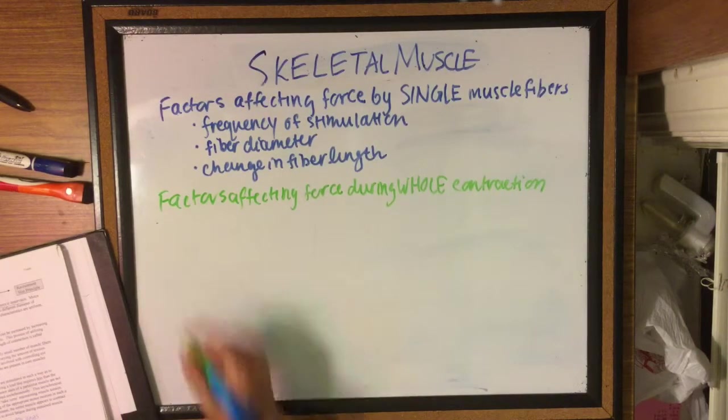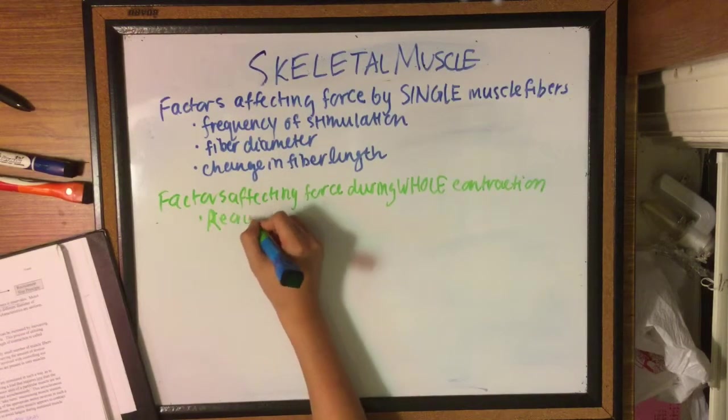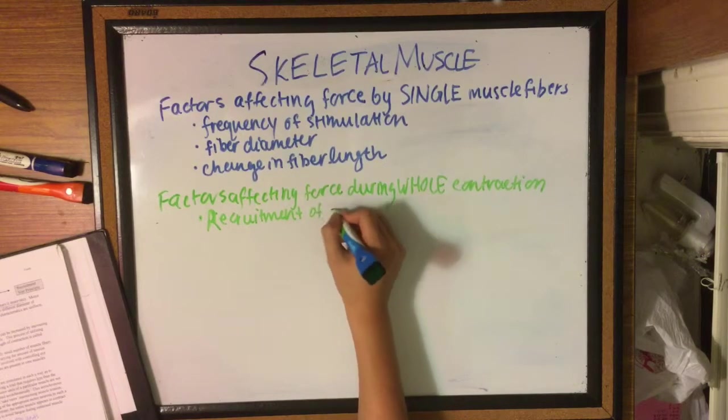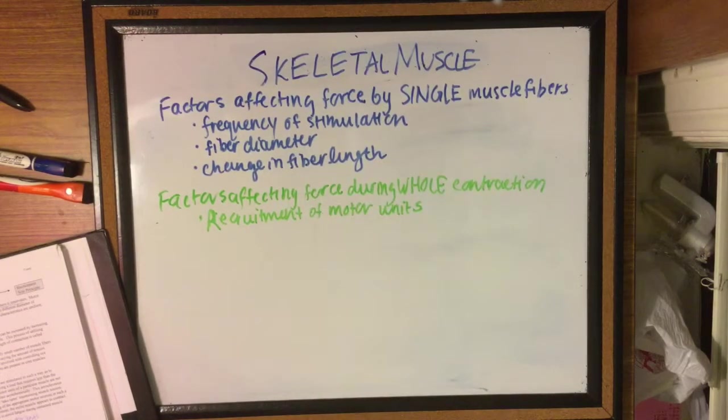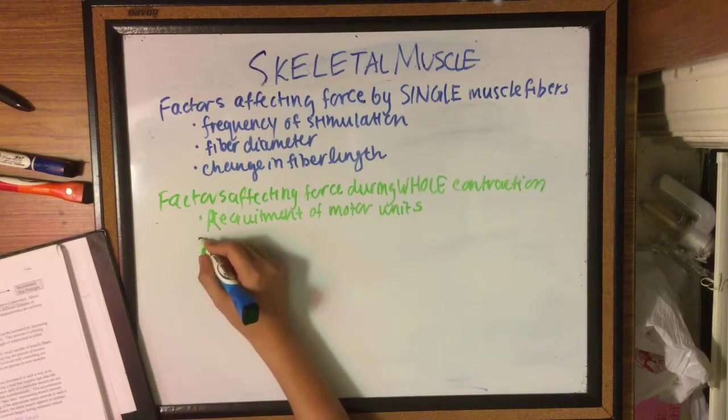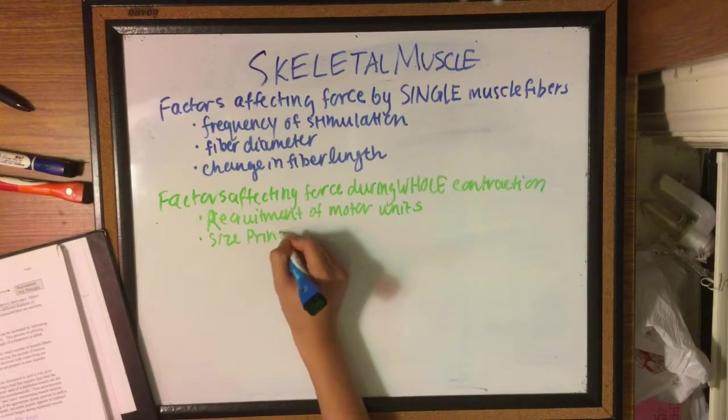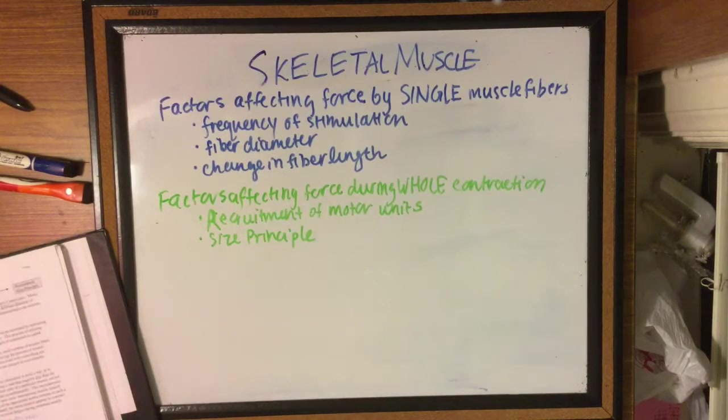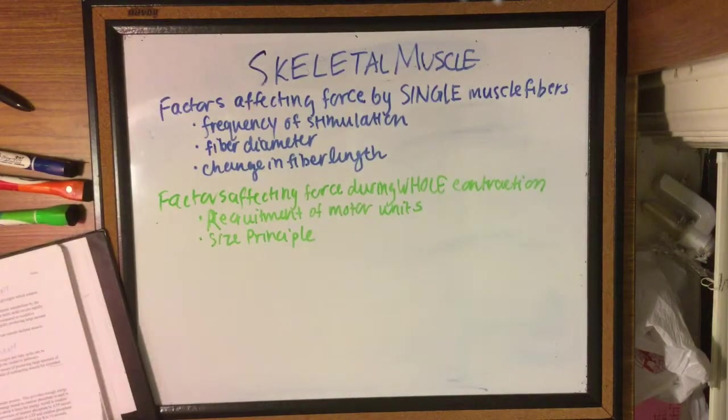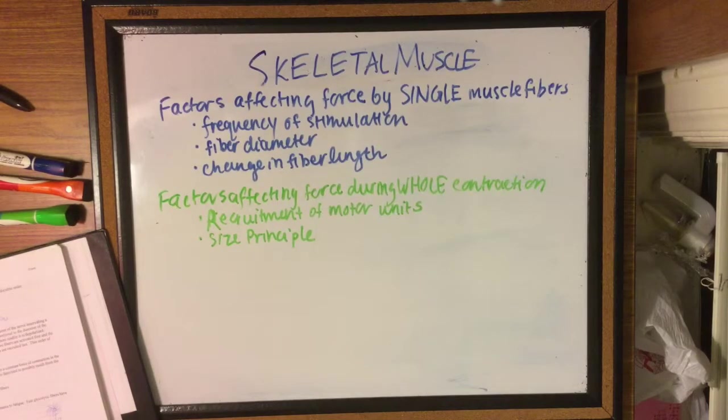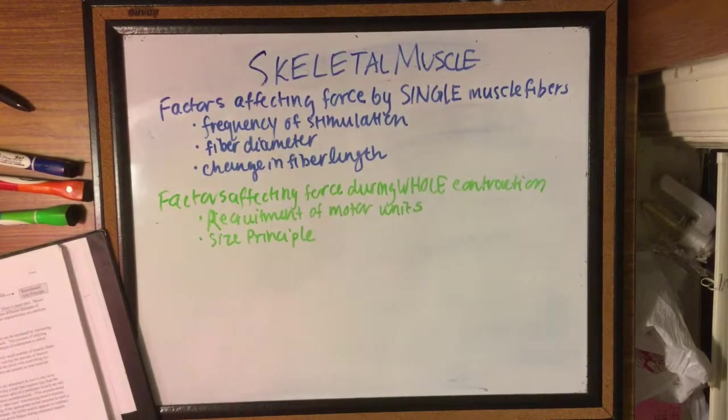So there are also some factors that affect the force when the whole muscle is contracted, and that would be the recruitment and the size principle. Different motor units take turns maintaining the muscle tension, and so this helps avoid fatigue. The size principle basically states that the small fibers are typically innervated by smaller diameter nerves and vice versa for larger fibers.